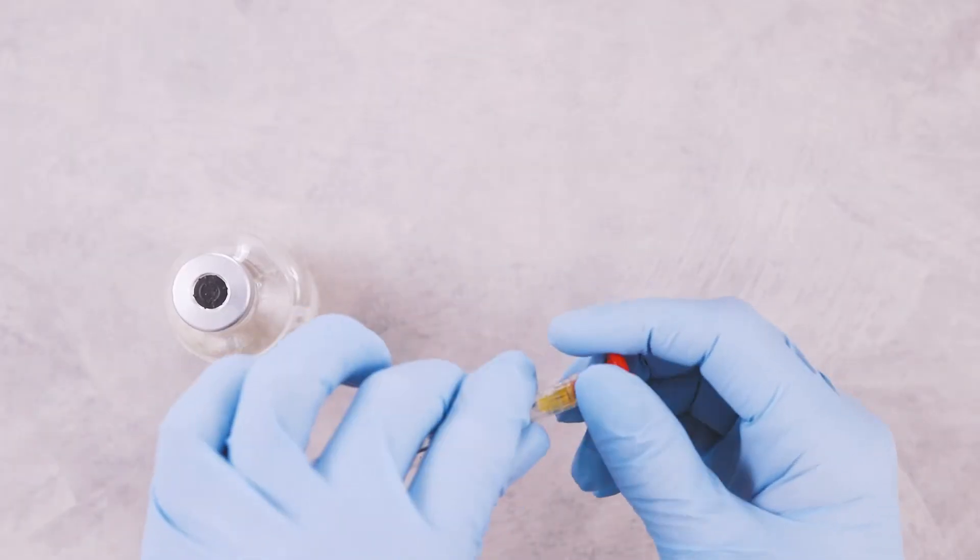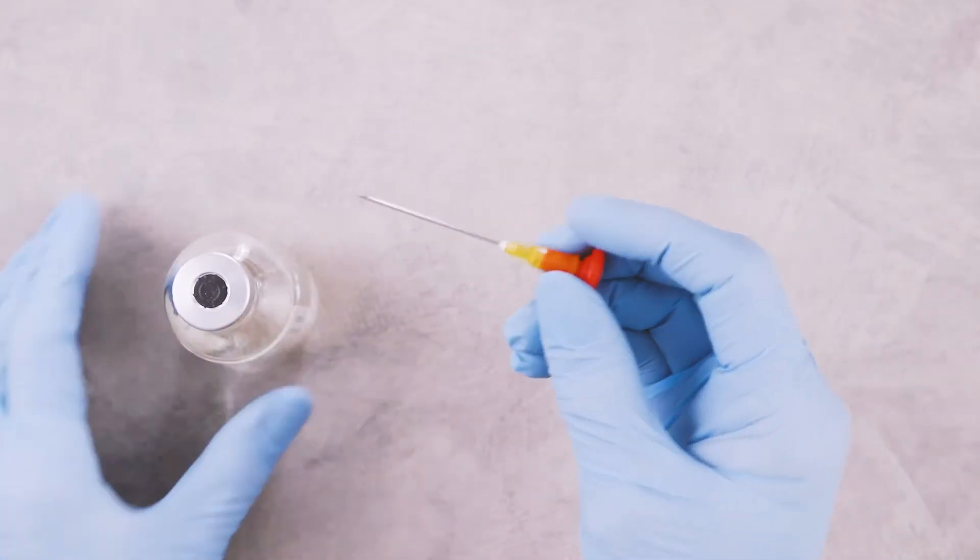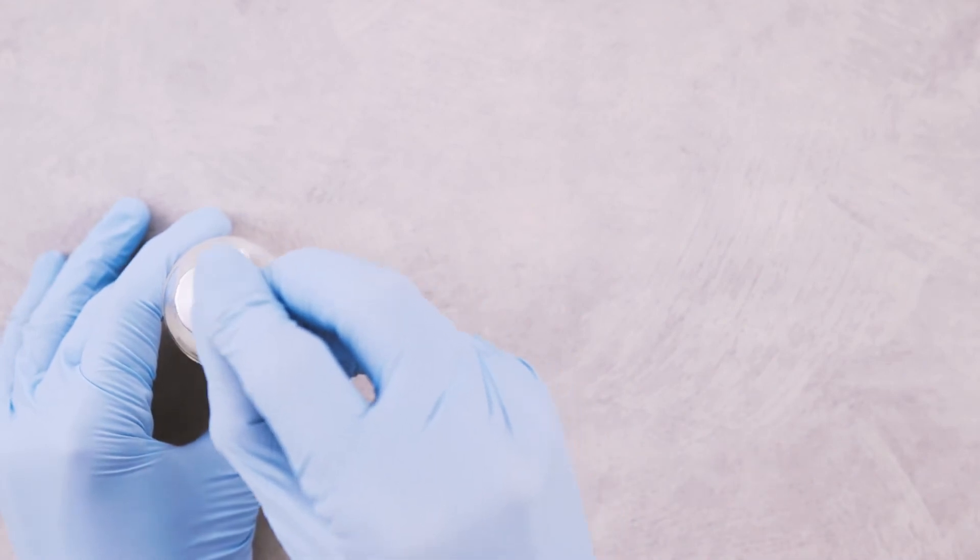Remove the needle guard from the needle using a twisting motion and insert the needle into the septum of the vial.